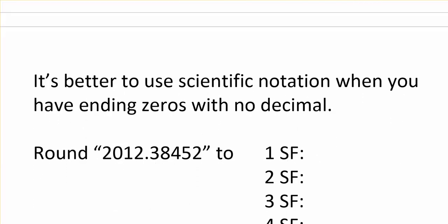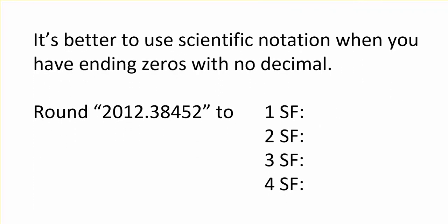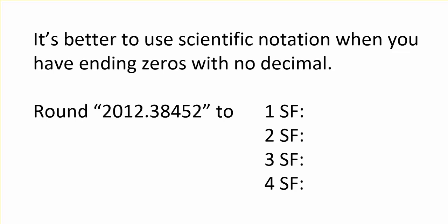It's better to use scientific notation if you have ending zeros where there's no decimal point shown. This comes up when you have larger numbers and you need to cut them off, round them off up in this area. So for example, for this number, to write it with one significant figure, I would write 2 times 10 to the third.